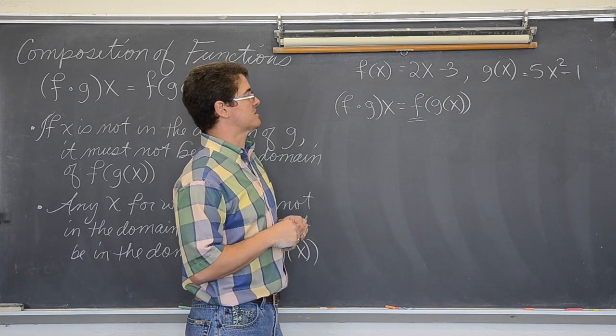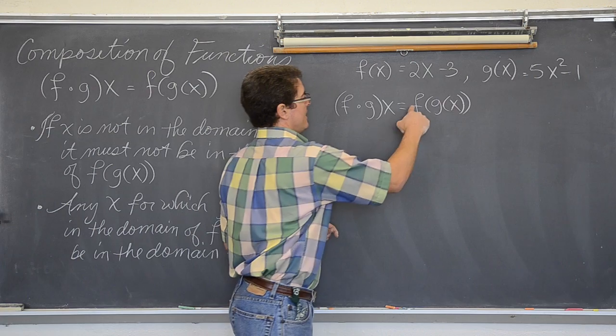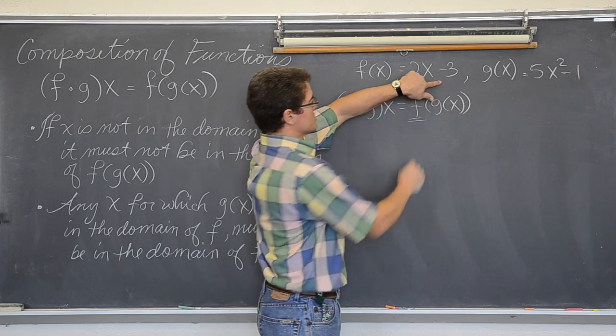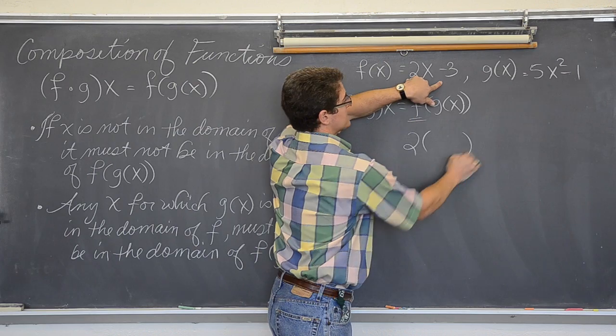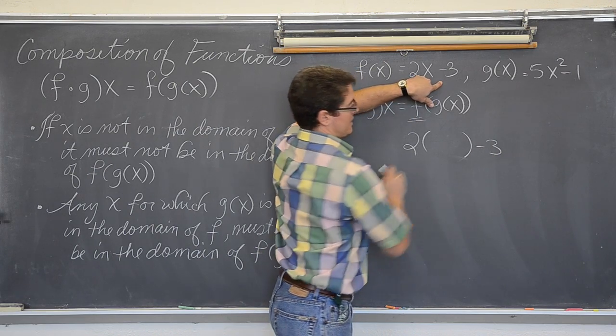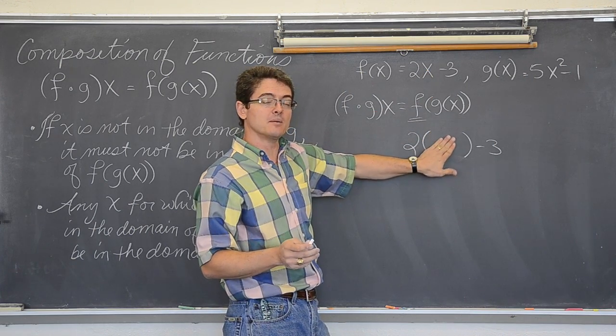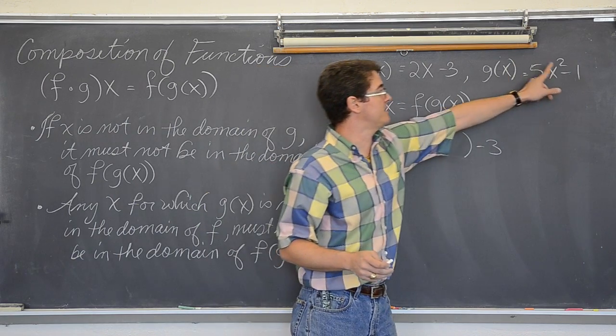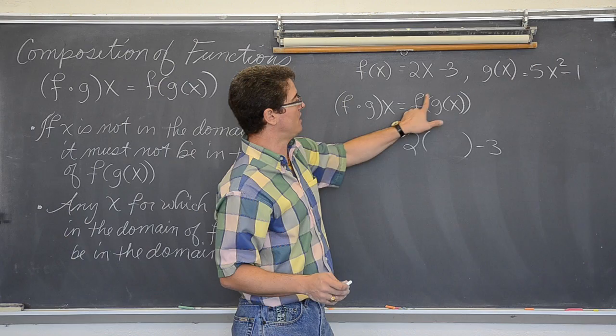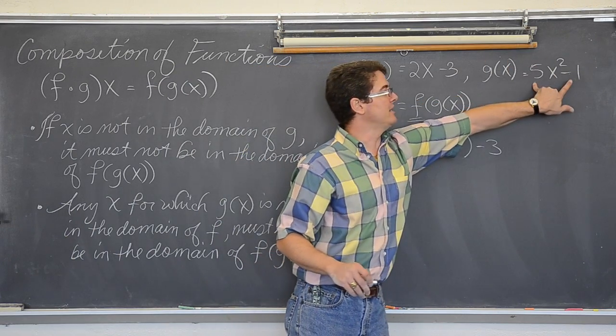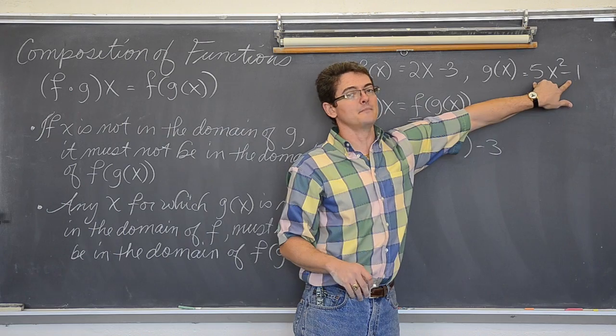So, I like to say that f, or the outside function, is 2 times something minus 3. I don't care what I am plugging in. x is some empty space where you are going to plug in something else. And that something else is g. See, it is f of g of x. And g of x is 5x squared minus 1.